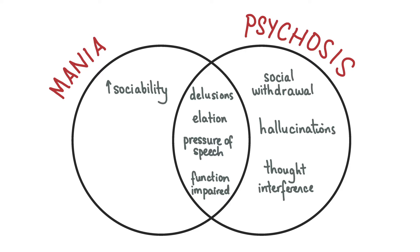Compare this to mania, where although patients may be high and elated with abnormal speech and often grandiose delusions, they do not have hallucinations or thought interference. Psychosis may be preceded by a prodromal period lasting days to months, characterised by social withdrawal and reduced function, and may also include intermittent episodes of unusual thoughts and/or hallucinations.